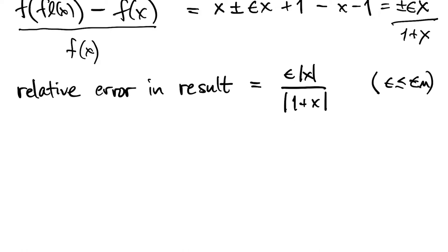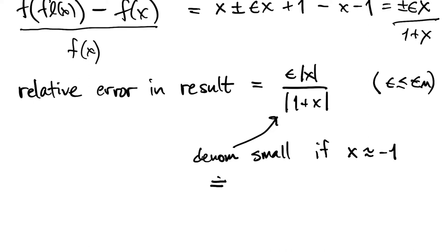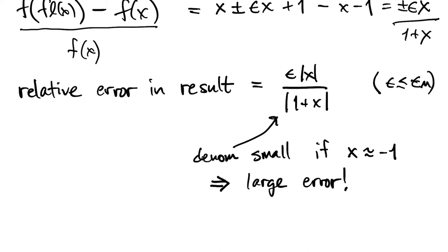And so in one sense, this is good news, the perturbation to the result is proportional to the perturbation to the data, but that proportionality could actually be a very large number if this denominator is small. So in other words, we can get a large relative error out of a small relative perturbation.